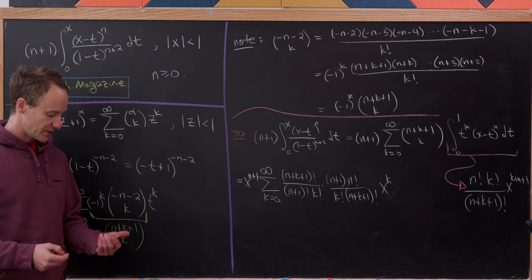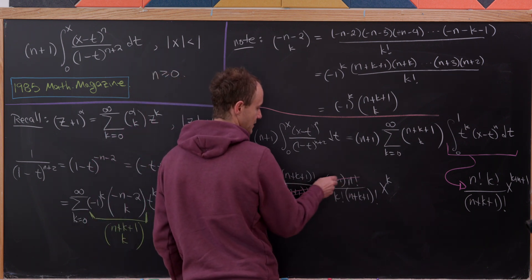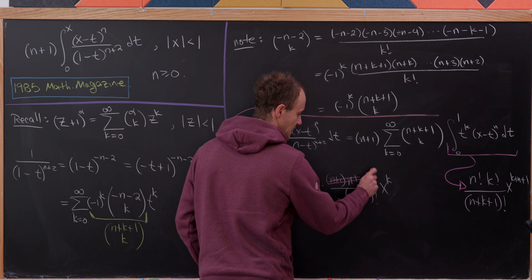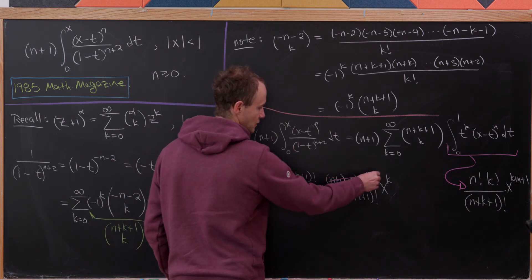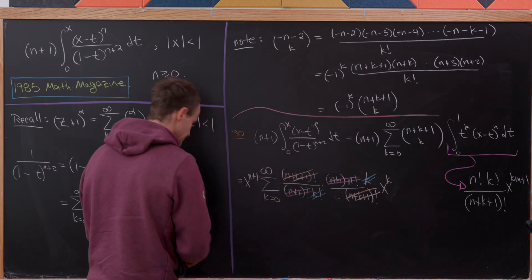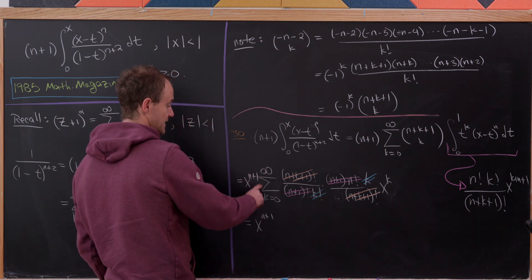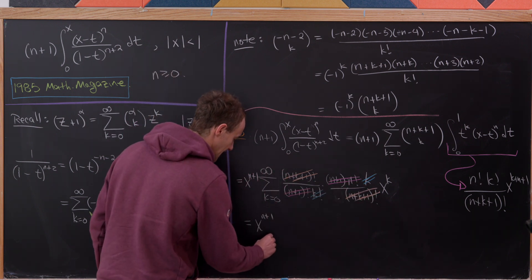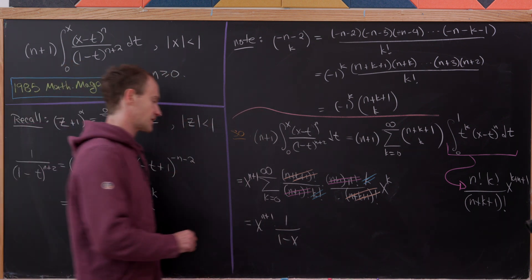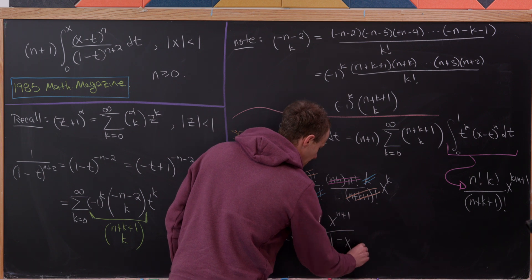Factoring out x to the n plus 1, a huge cancellation occurs: n plus 1 factorial cancels with n plus 1 times n factorial, both k factorials cancel, and the two n plus k plus 1 factorials cancel. We're left with x to the n plus 1 times the sum from k equals 0 to infinity of x to the k. That's a geometric series summing to 1 over 1 minus x, giving the final answer x to the n plus 1 over 1 minus x.